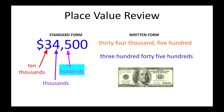Traditionally, we would read 34, and then say the place value when we get to the comma: 34,500. But I could also read these three digits together and then say the place value: 345 hundreds. So if I wanted to produce $34,500 in $100 bills, I would need 345 hundred dollar bills. Instead, if I was talking about $10 bills, I could read the number up to the tens place — that would be 3,450 tens.